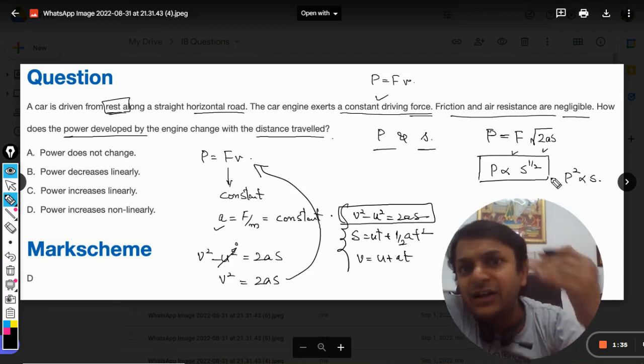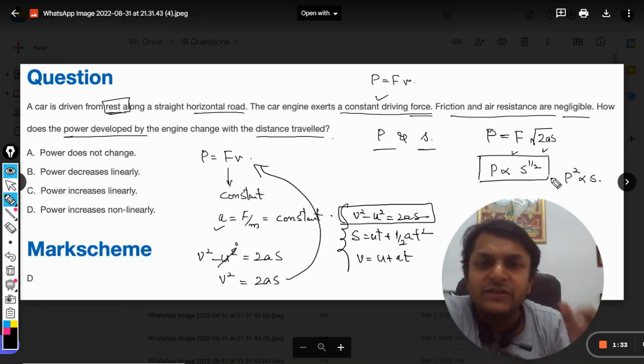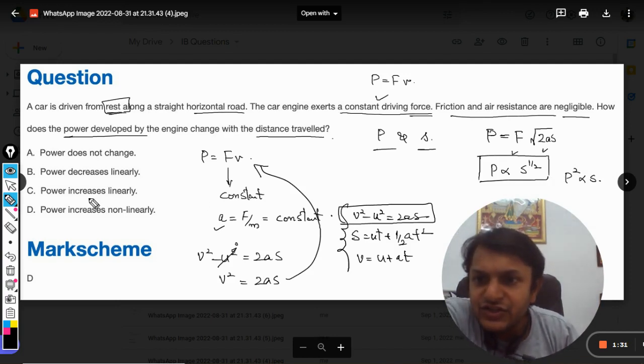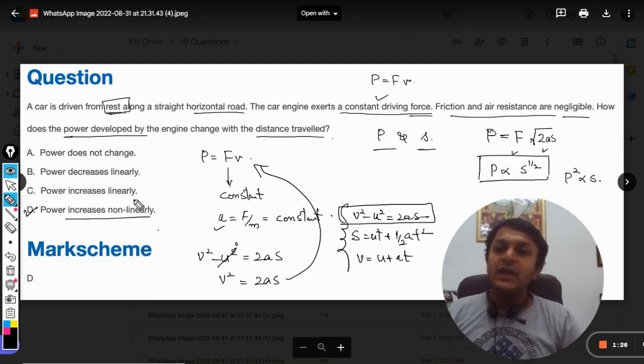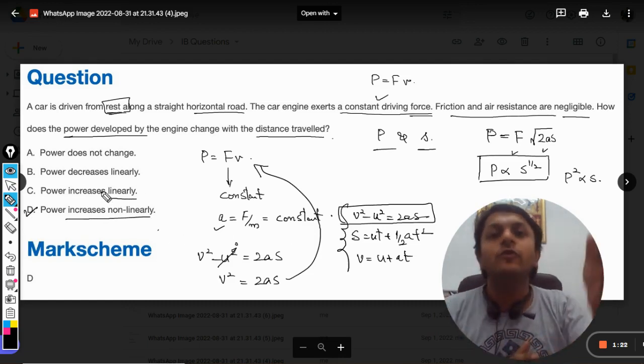Power will increase with the distance but it will be a non-linear relationship. It will be increasing non-linearly, so D is the correct answer.